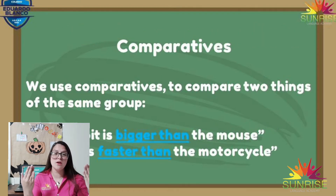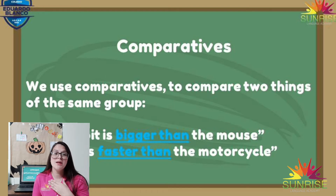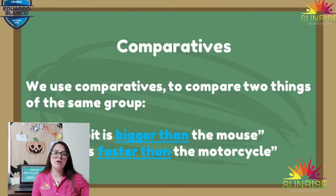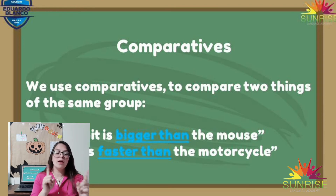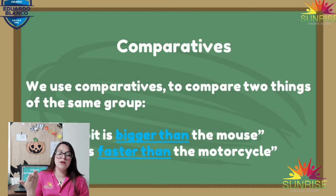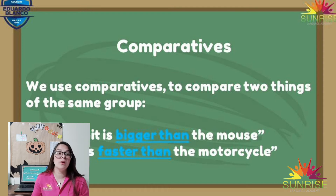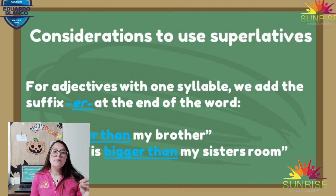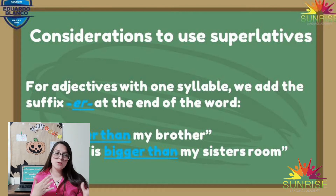We use comparatives to compare two things in the same group. For example: 'My room is cleaner than my brother's' or 'I am smaller than my brother.' We use them to compare two things under the same characteristic.